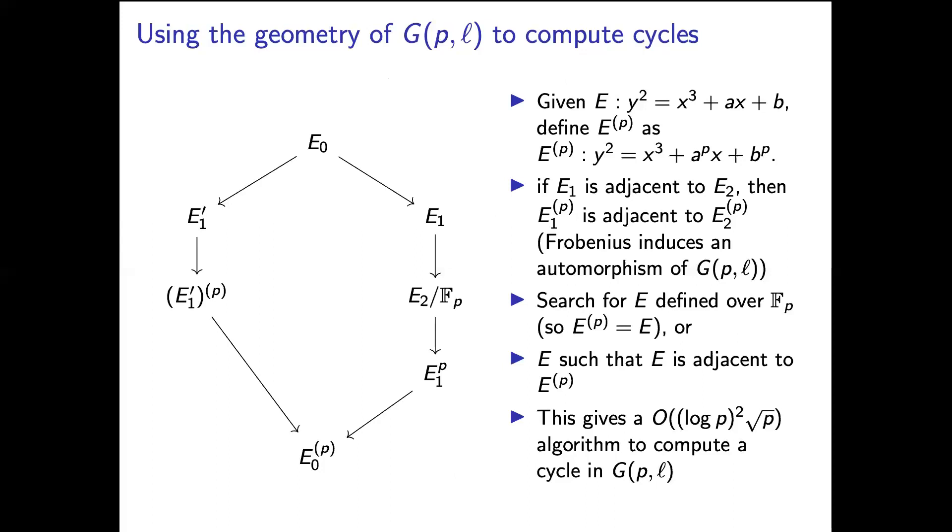So this means we need to find four of these special curves in the isogeny graph. Now assuming GRH there's about √p many curves defined over F_p and about √p many curves adjacent to their conjugate curve like this. So this means that a random walk is going to find one of these with probability about 1/√p. So if we take about √p many of these we'll expect to find one when we need to do this a constant number of times.